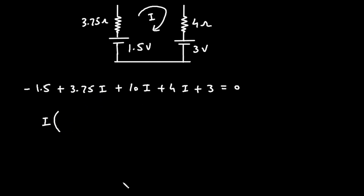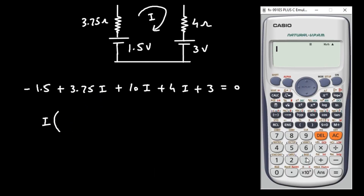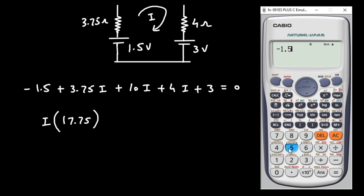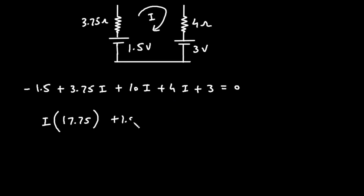Taking I common: 3.75 plus 3.75 plus 10 plus 4 equals 17.75. So it is I into 17.75. The constants are minus 1.5 plus 3 equals plus 1.5. Therefore I into 17.75 is equal to minus 1.5.